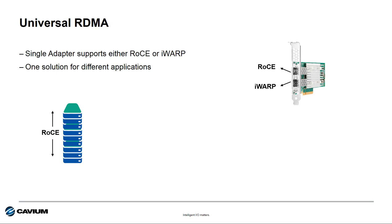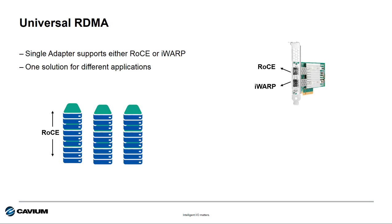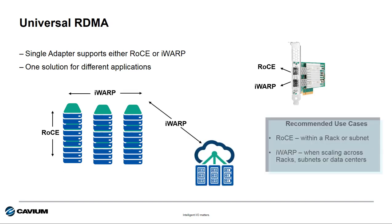Here we have a rack of servers where we might run RoCE because all of those servers are on the same subnet and we don't need to do any routing. But as we have more racks and need to move our IO between racks, we might want to consider using iWARP. And if we want to connect across data centers, we definitely want to use iWARP for its scalability attributes. That means a single adapter can be deployed in each server and connect to either the RoCE network or the iWARP network — that's what we mean by Universal RDMA.